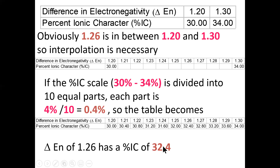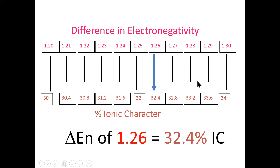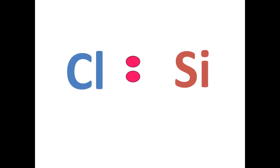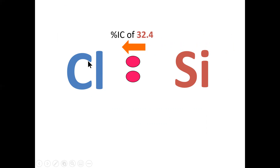The significant digit is to the nearest decimal place. This tells us the bond is a polar covalent bond. The electron pair will migrate toward the more electronegative element — chlorine — creating a region that is more electron dense near the chlorine. The difference of 1.26 falls between 0.4 and 2.0, confirming it's polar covalent. When they share an electron pair, it spends more time closer to the chlorine, making the chlorine end of the bond negative and the silicon end positive.